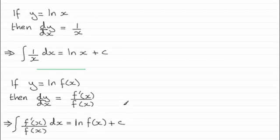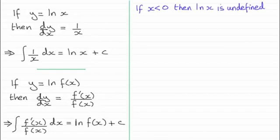So you should already be familiar with these two results. But what I want to show you next is what happens if x is a negative number, it's less than zero. The natural log of x is undefined. So how do we get around this problem?